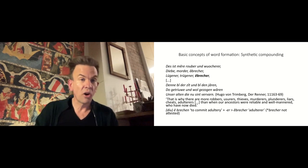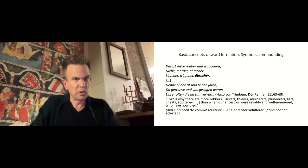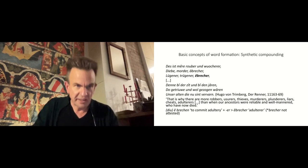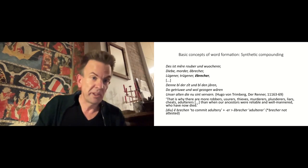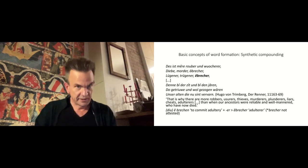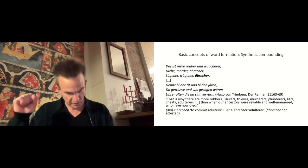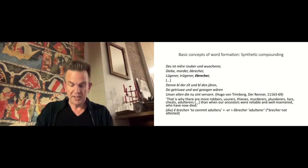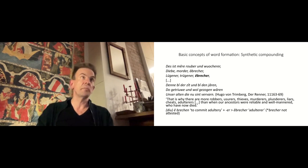Des ist mehrere, rauber und wucherer, dir bemorder, Ahebrecher, lügner, trügener Ehebrecher, denn wie der Ziet und wie den Jahren do getrübe und wohlgezogen waren, unser Alten, dir nur sind verfahren. Ehebrecher is not a compound because the second element, Brecher, is not attested as an independent lexeme in Middle-High German.